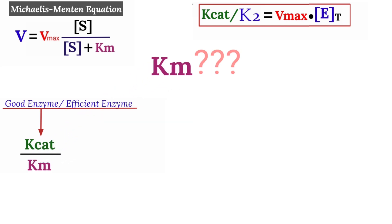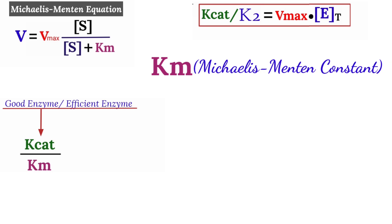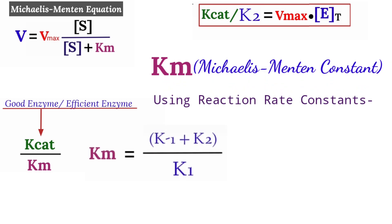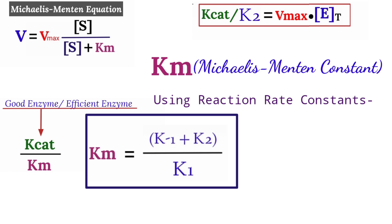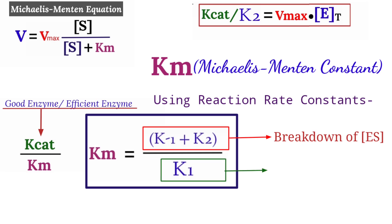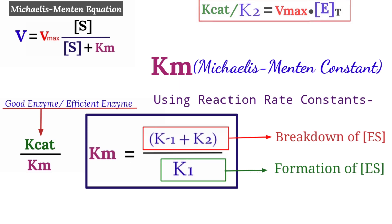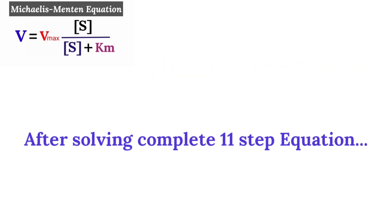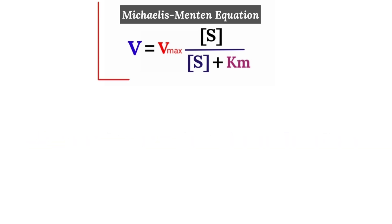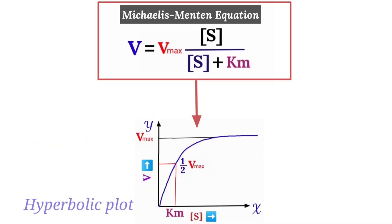What is Km? Km is the Michaelis-Menten constant. We can express it using reaction rate constants: (k₋₁ + k₂) divided by k₁, where k₋₁ plus k₂ reflects the breakdown of the enzyme-substrate complex and k₁ reflects its formation. By solving the complete equation we derived the Michaelis-Menten equation, and this equation generates a hyperbolic plot.